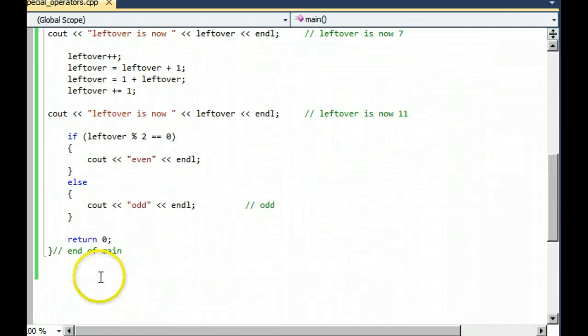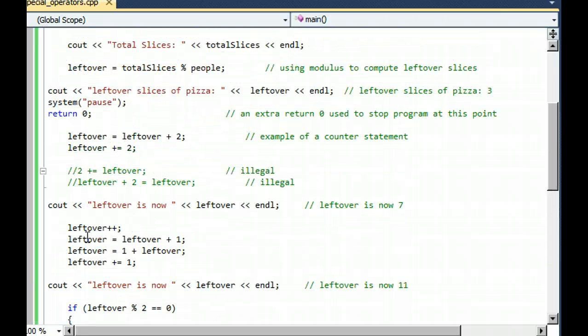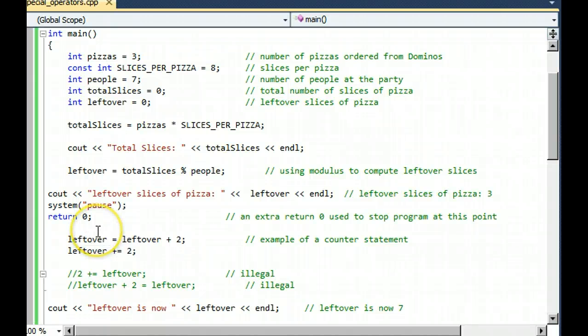You can put multiple return zeros in a program and the computer stops at the first return zero. And that's convenient in teaching situations like this or debugging big programs.